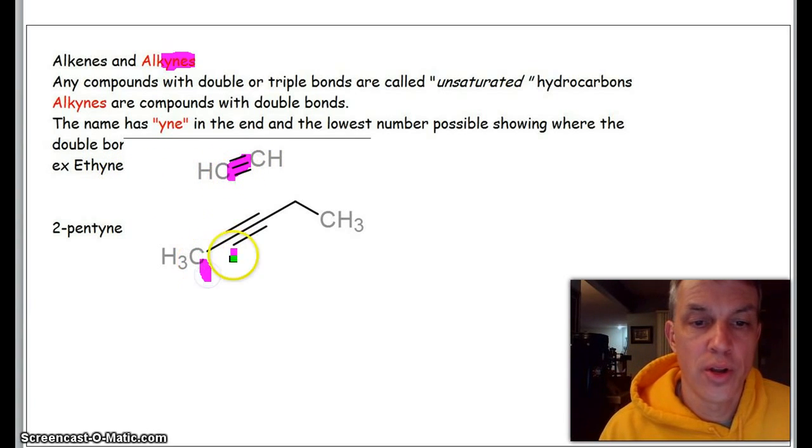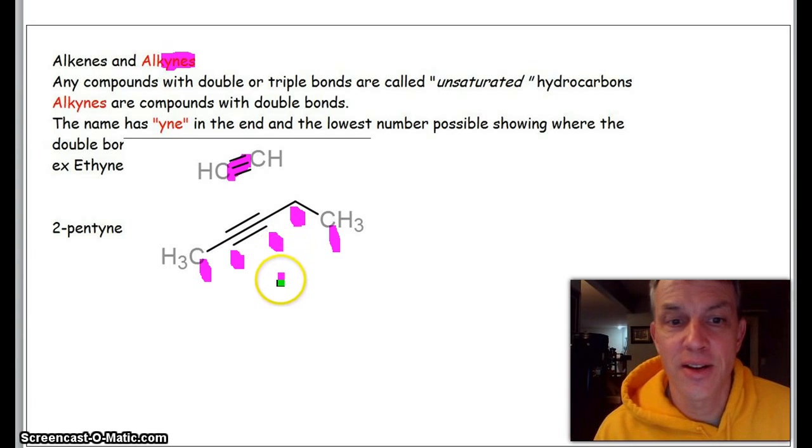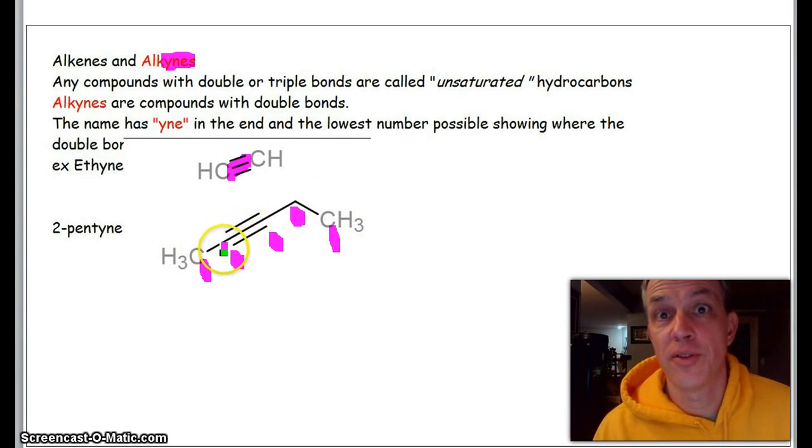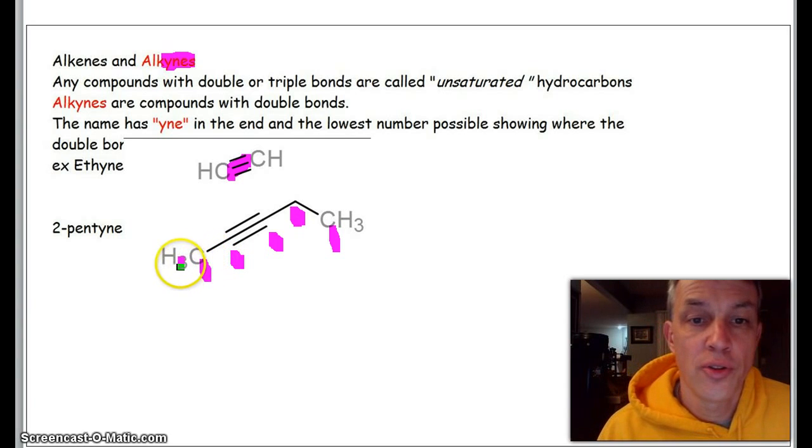We just have to tell where it is, so it's one, two—it's 2-pentyne. Instead of one, two, three pentyne, because 2-pentyne is a lower number than 3-pentyne. So we've done alkanes with alkyl groups on them, and we've done alkenes and alkynes.